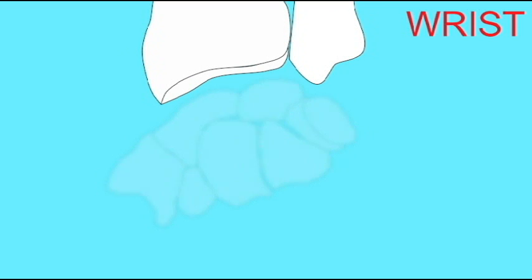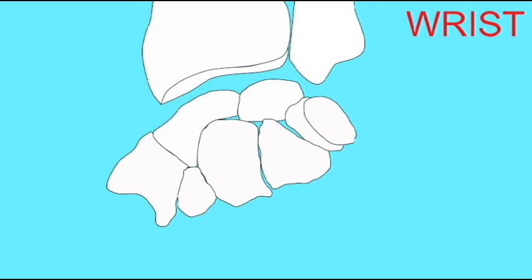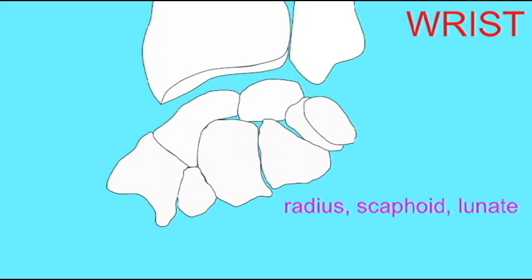The movements of the wrist are caused by the movements between the scaphoid and the lunate of the carpus and the radius of the forearm. The ulna serves a supporting role but it is not the point where the articulation occurs.